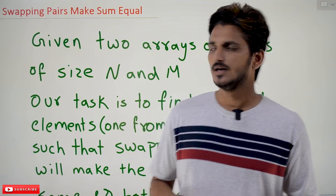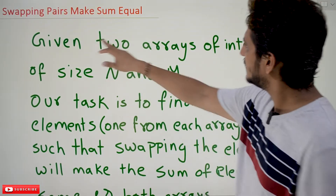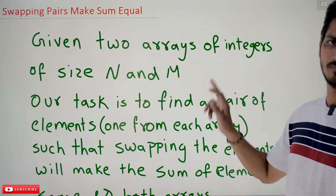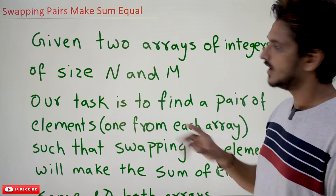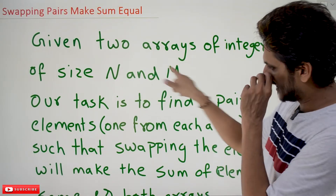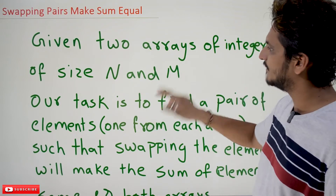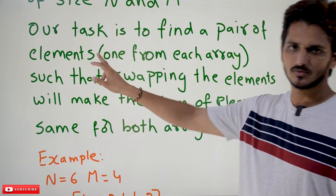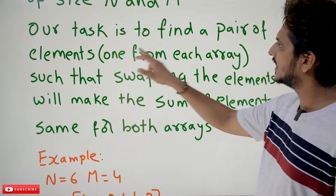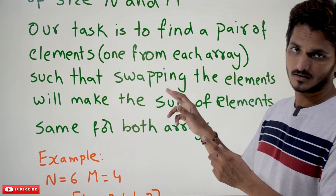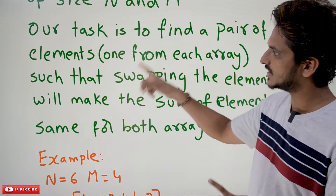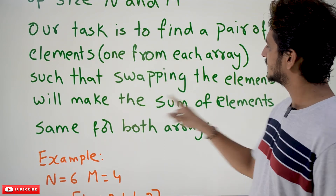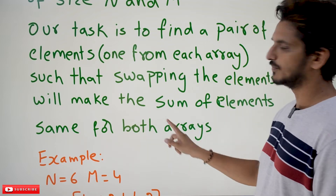Coming to today's class, let's understand the example. Given two arrays of integers of size n and m — n elements and m elements — our task is to find a pair of elements, one from each array, such that swapping the elements will make the sum of elements the same for both arrays.